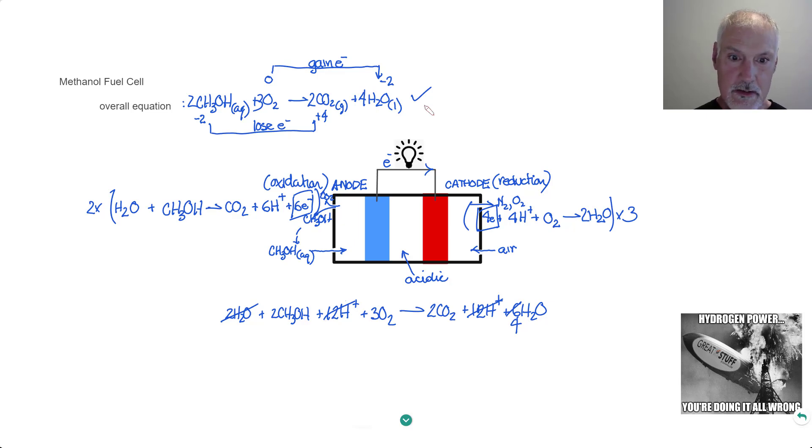So make sure you have a good thorough understanding of the overall equations for these two particular cells, the hydrogen cell and the methanol fuel cell. Once you have that, you can determine from there what's occurring at the anode and what's occurring at the cathode by examining their oxidation numbers.